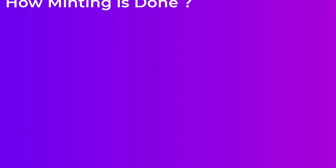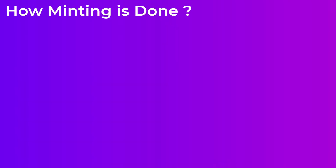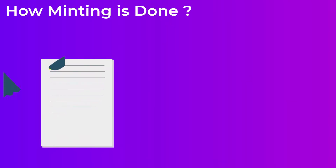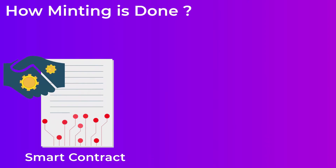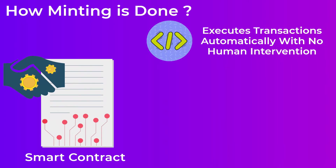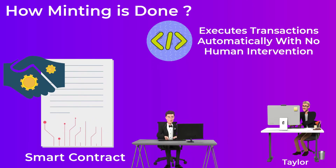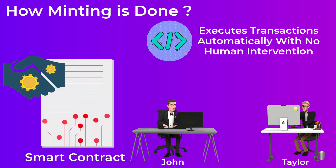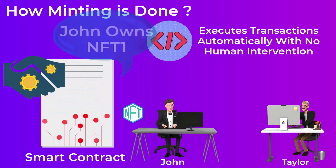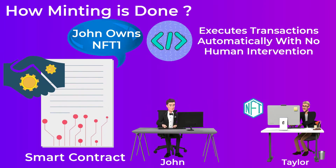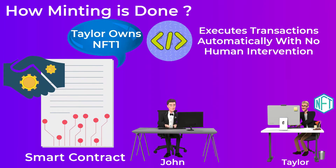So how is minting actually done? Well, minting an NFT is done by smart contracts. Smart contracts are basically lines of code that can execute transactions automatically without your intervention. This smart contract creates the tokens and changes the owner information when the NFT is sold.